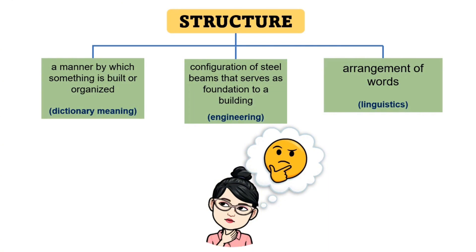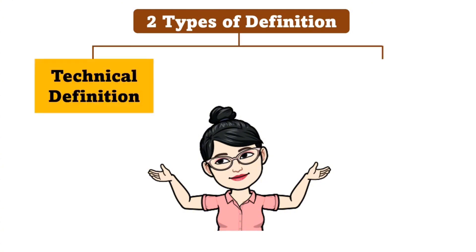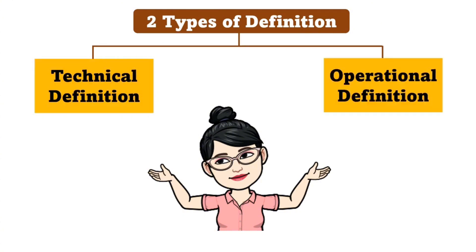Because of the confusion that this word may cause, it is important to define this term in the definition of terms part of your research paper. You will define it as to how it was used in your study. Before proceeding to define a term in your research study, it is important that you know the two types of definition: the technical definition and operational definition.